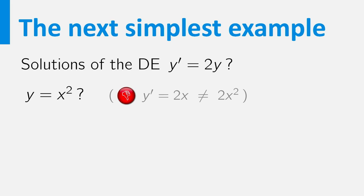Well then, if y equals x squared doesn't do the job, which function does? The exponential function comes in handy here. The derivative of e to the power 2x equals 2 times e to the power 2x. So this is indeed a function for which the derivative equals twice the function itself.